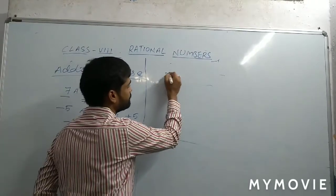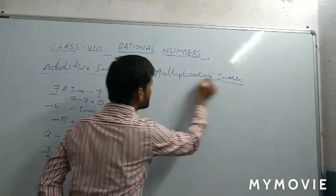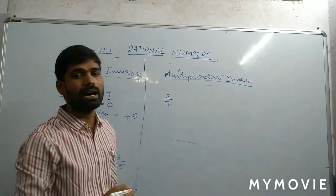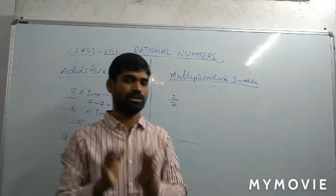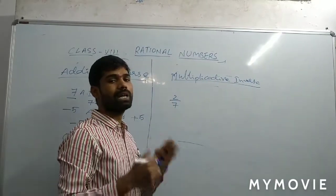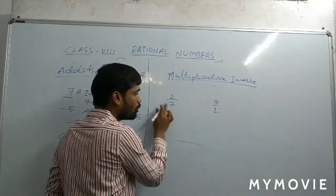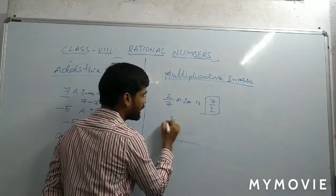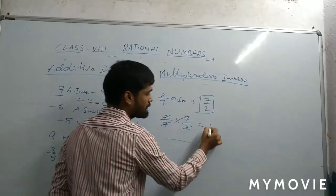Now let us come to multiplicative inverse. Any rational number, say 2 by 7 — we should take the reciprocal. We do not change the symbol; whatever the symbol, it stays as is. In multiplicative inverse, we take the reciprocal. So the reciprocal of 2 by 7 is 7 by 2. So, 2 by 7 multiplicative inverse is 7 by 2. Let us multiply both: 2 by 7 into 7 by 2 — the 2s cancel and the 7s cancel, so the answer is 1.